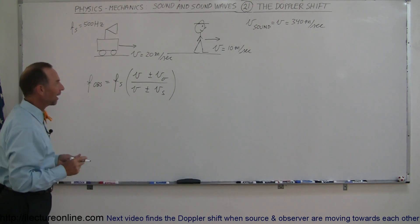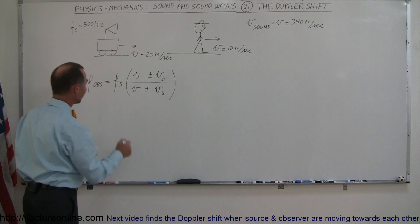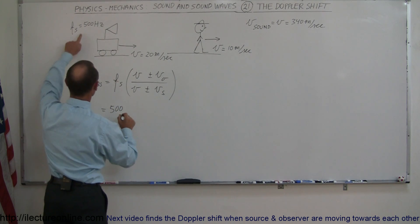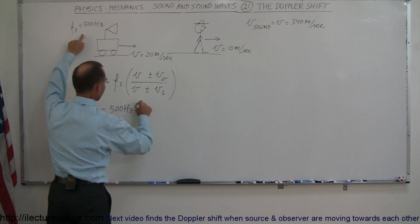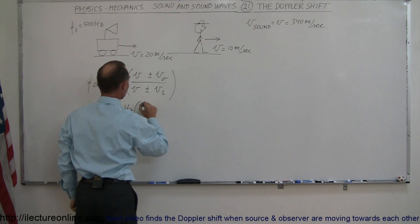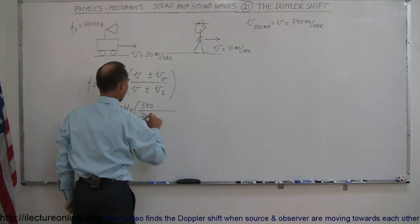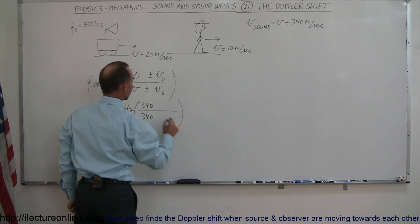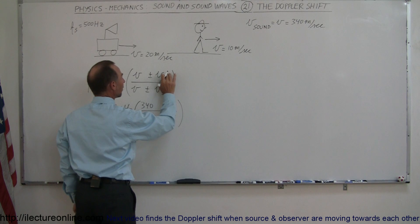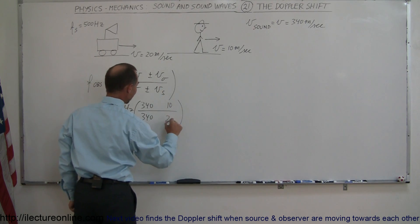Now we have both of these velocities, so let's plug everything in. This is equal to 500 Hz — that's the given. The velocity of sound in air was given to be 340 meters per second. We'll put in the velocity of the observer, which is 10, and the velocity of the source, which is 20.